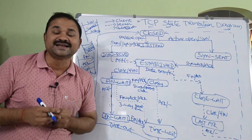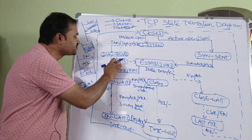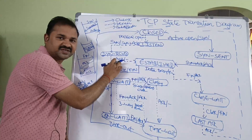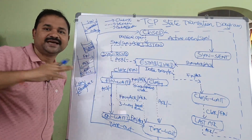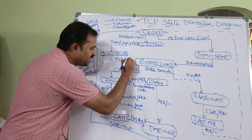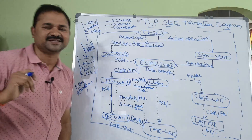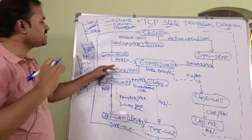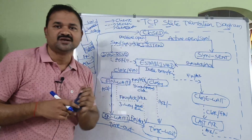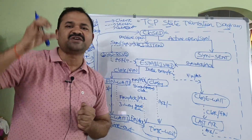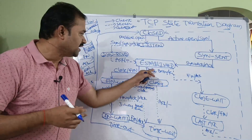After sending SYN plus acknowledgement, the server goes into the SYN-received state. The server then receives acknowledgement from the client and is not sending any segment at this point, so we write a hyphen to indicate no output. After receiving the acknowledgement, the server goes into the established state, completing the first phase — connection establishment.